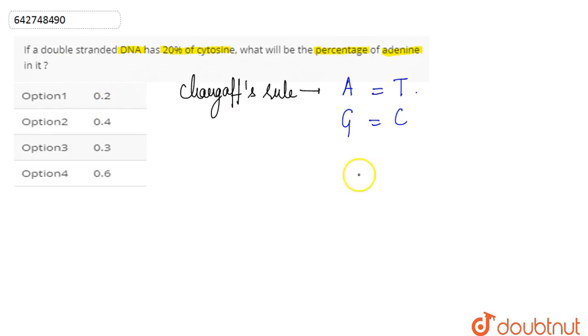Also, the purines and the pyrimidines are always equal in amount. That is, A plus G, which are the purines, are equal to the pyrimidines, which is C plus T.